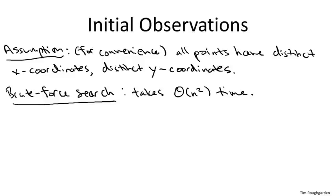You might have an initial instinct that because the problem asks about a quadratic number of different objects, we fundamentally need to do quadratic work. But recall that in counting inversions, using divide and conquer, we were able to get an n log n time algorithm despite the fact that there might be as many as a quadratic number of inversions in an array. One key to getting that n log n algorithm was to leverage a sorting subroutine — we piggybacked on merge sort. So the question is: can sorting again be useful to beat the quadratic barrier here?